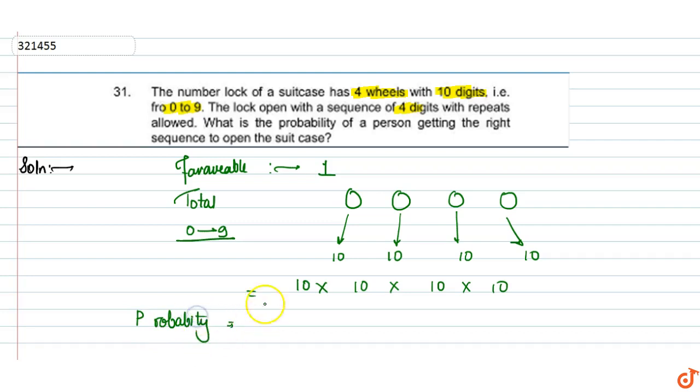Probability will be equal to favorable outcome upon total outcome. So here 1 upon 10 to power 4. Because the probability of a person getting the right sequence to open the suitcase will be equal to 1 upon 10 to power 4. So this is the answer for this question.